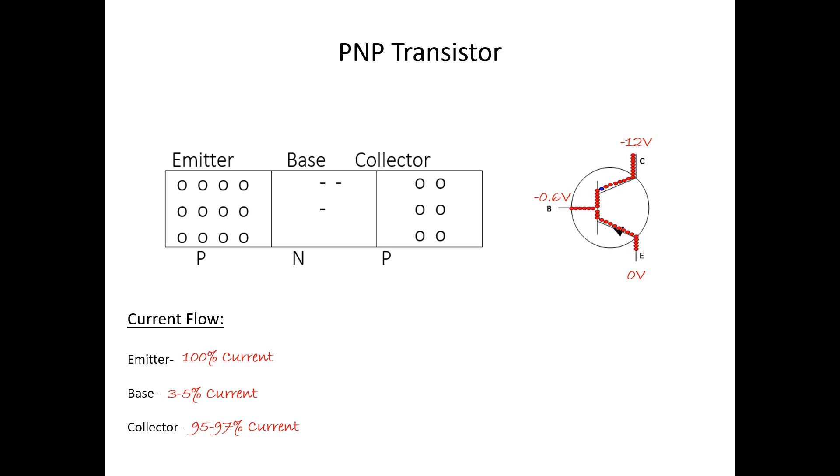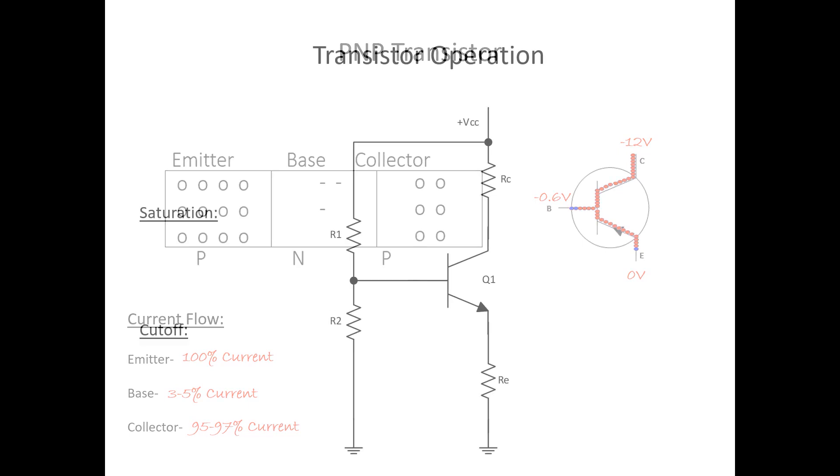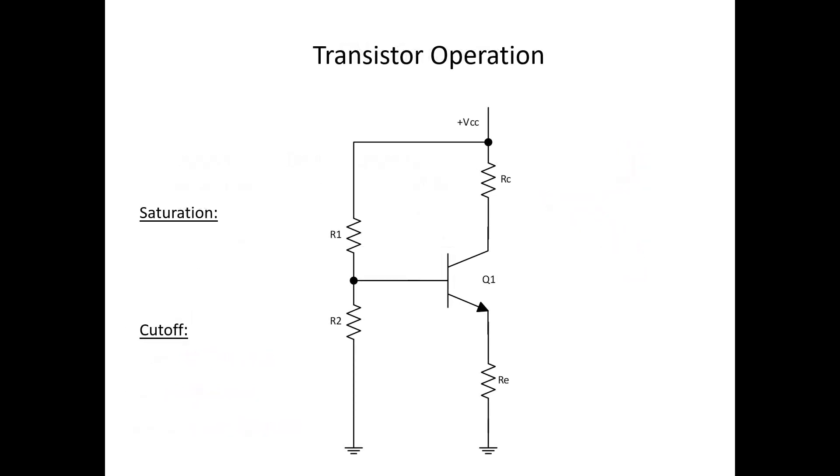Now let's move on to our last topic, transistor operation. Okay, so by this point, we've learned what a transistor is, and the two types, along with their requirements. Let's take a transistor and go ahead and put in a circuit.